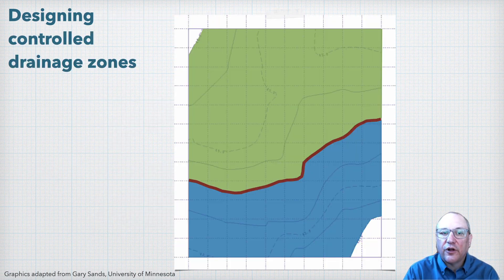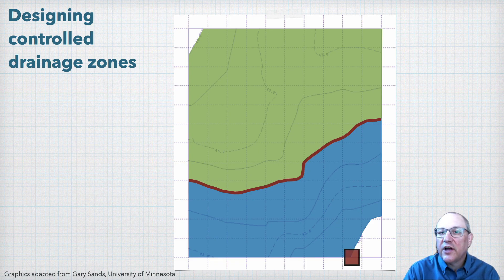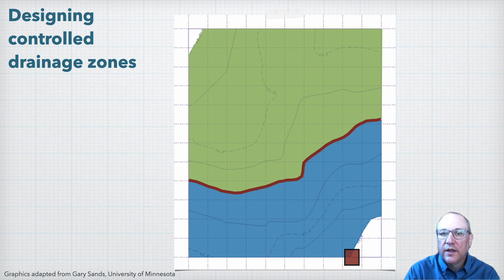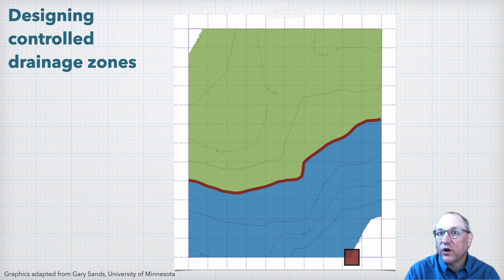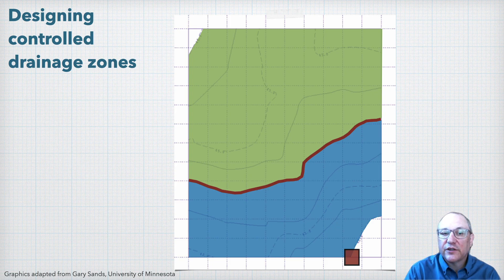This time let's put our first control structure on the 42-foot contour. The second structure again goes on the 44-foot contour, but we had it on the east edge of the field before, but again that control structure could be located anywhere along that 44-foot contour that makes sense. So if we decide it works better to put it on the west edge of the field, we end up with something like this.